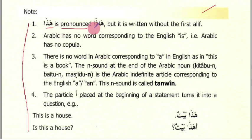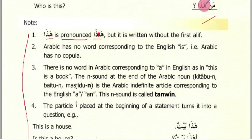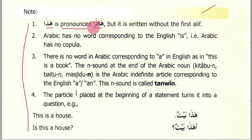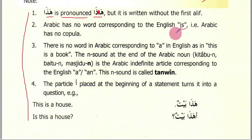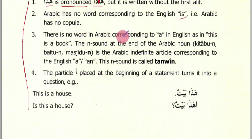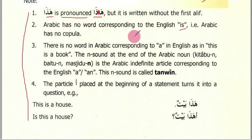'Hadha' is pronounced as 'hadha' but written without the first alif — we do not write that alif, but we do pronounce it. Arabic has no copula, meaning Arabic does not have verbs for 'is', 'be', 'become', 'was', or similar things. We just need two words and it's very simple.